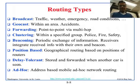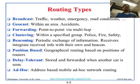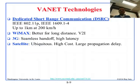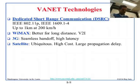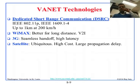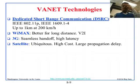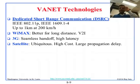Ad hoc operation should work both with infrastructure — roadside units — and without it. For VANET, several technologies have been discussed. One is DSRC — Dedicated Short Range Communication — also known as 802.11p and the 1609.1 through 1609.4 standards. DSRC can be used up to 1 kilometer at speeds of up to 200 kilometers per hour.